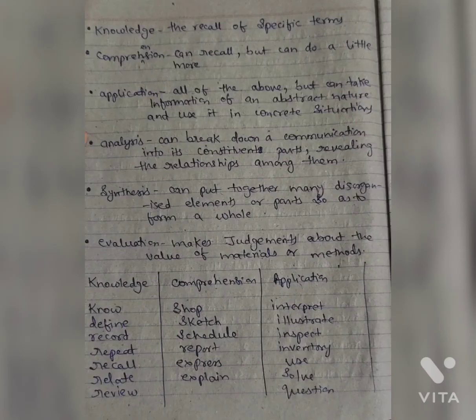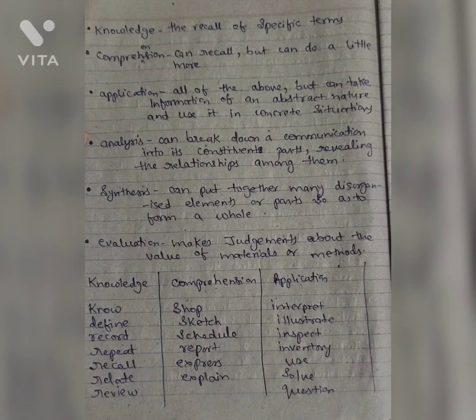Knowledge — the recall of specific terms. Comprehension — can recall but can do a little more. Application — all of the above, but can take information of an abstract nature and use it in concrete situations.